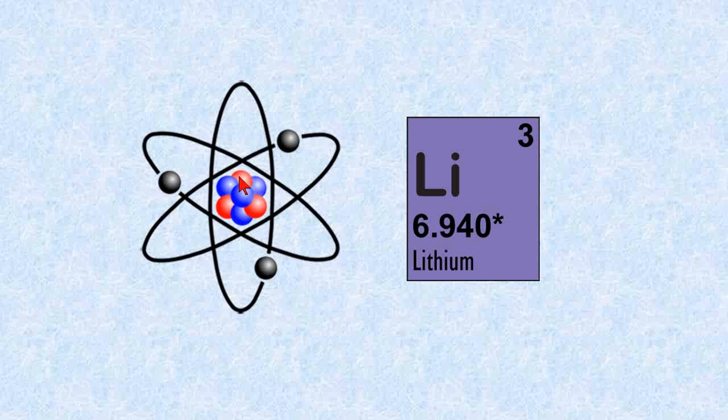So when we look at this diagram of the lithium atom, there will always be three protons—one, two, three, we'll say that the red ones here are the three protons, yet there may be three or more neutrons.